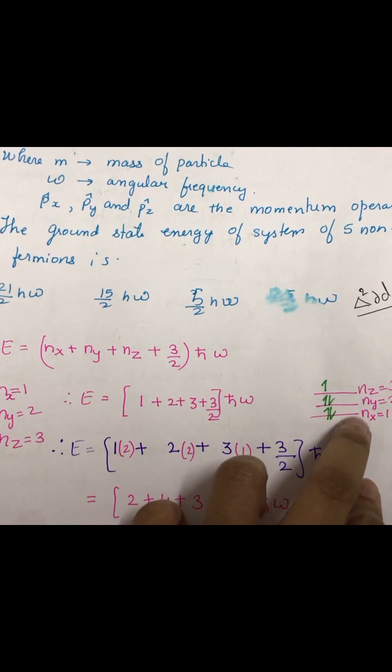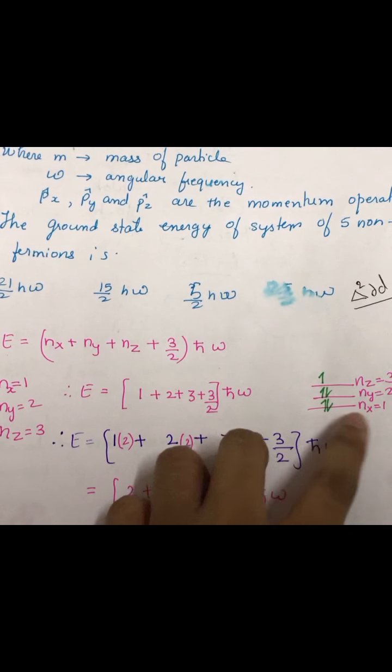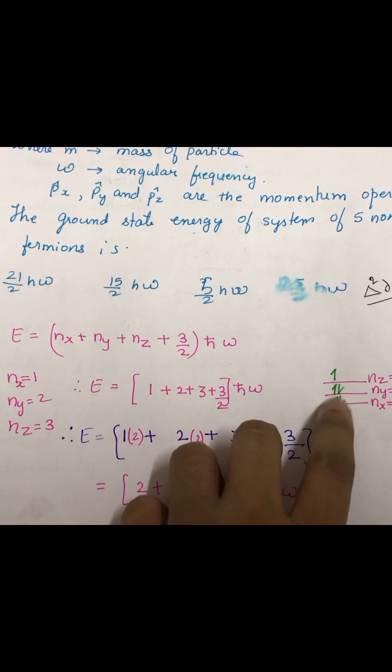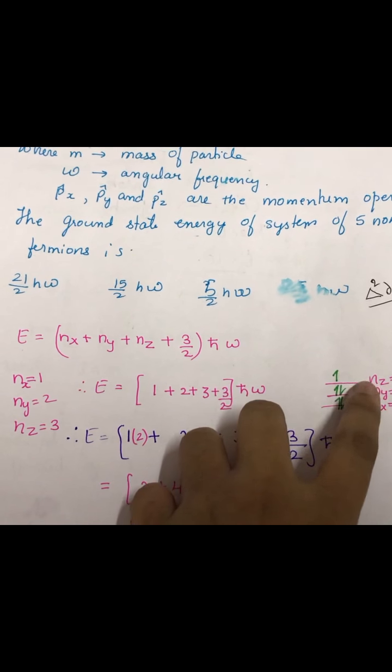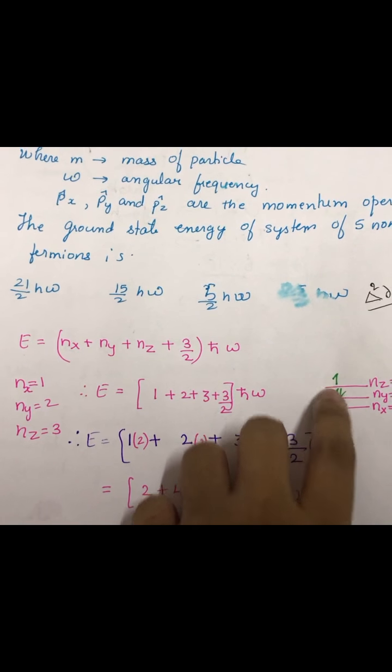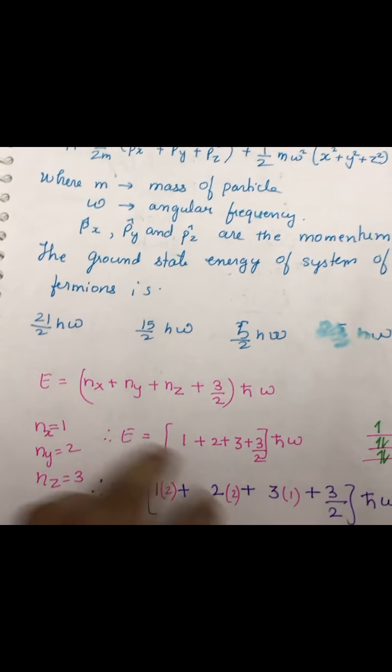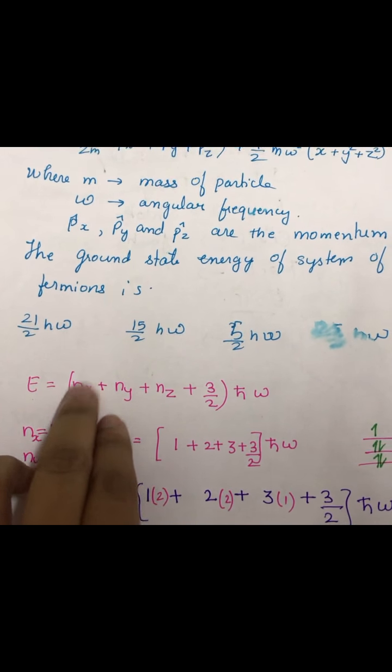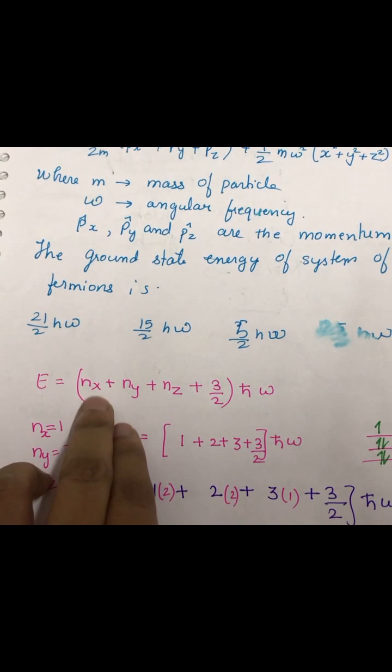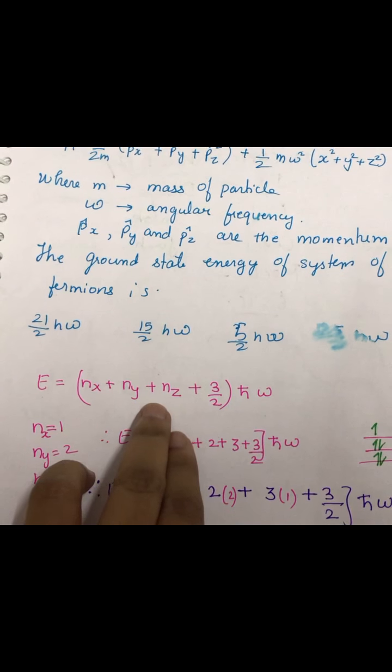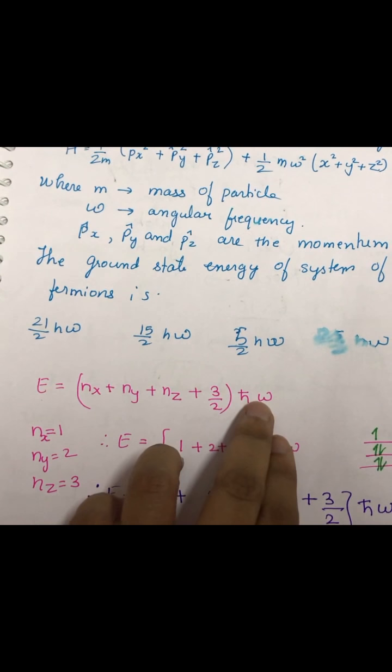When you arrange these fermions, Nx would contain two fermions, Ny would contain two fermions and Nz would contain one fermion. So the energy formula is E equals Nx plus Ny plus Nz plus 3 by 2 and h-bar omega.